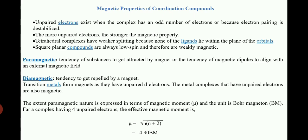Suppose the complex contains four unpaired electrons; the effective magnetic moment is represented as μ = √(n(n+2)), where n is the number of unpaired electrons. Here we have four unpaired electrons, so: μ = √(4 × (4+2)) = √24, which gives a final value of 4.90 BM.